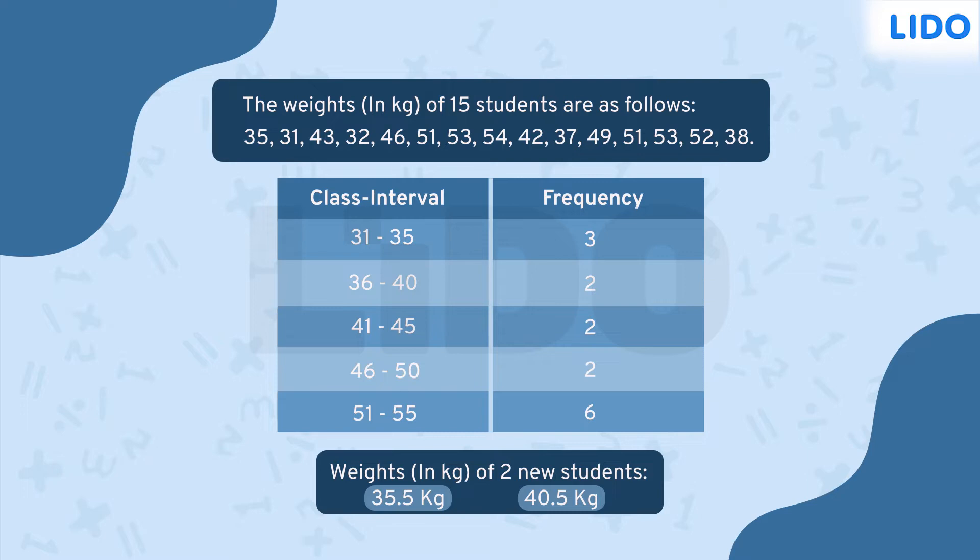We can see that 35.5 and 40.5 don't fall in any of the class intervals. That's because there are gaps in consecutive intervals. Look at the first two class intervals for example. Any number between 35 and 36 wouldn't belong to either of these classes.